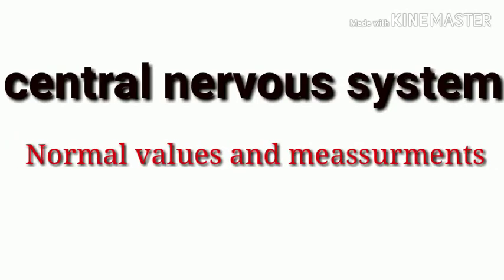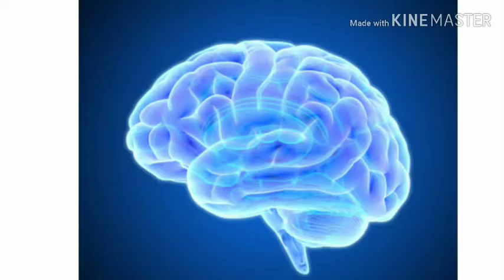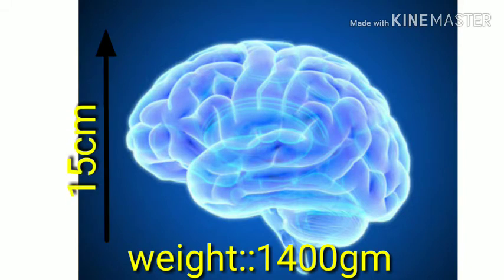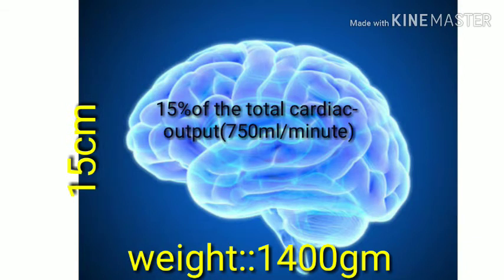Hello friends, today we are discussing the normal values and measurements asked in various examinations from the topic of the central nervous system. First, we are looking at the weight of the brain, which is 1400 grams, and the length is 15 centimeters. To maintain that, the brain receives about 15% of the total cardiac output.